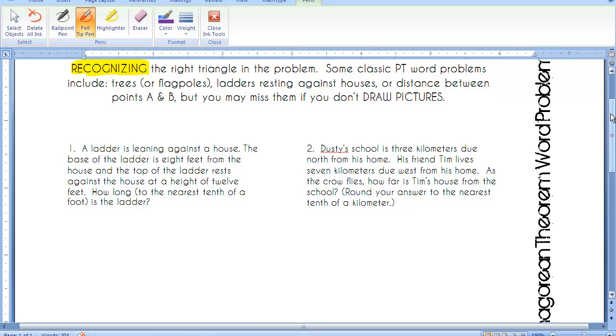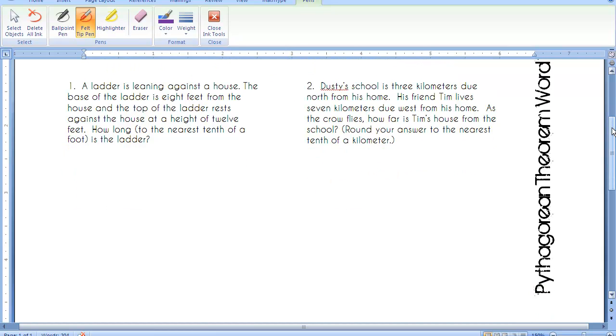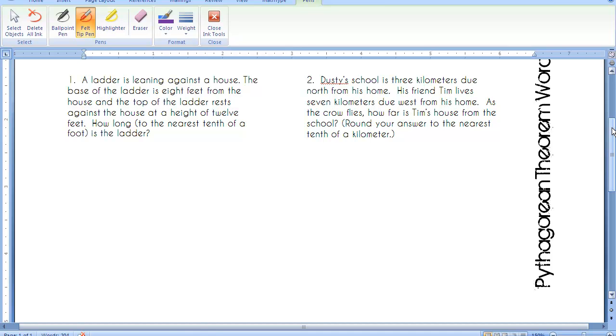Let's take a look at the first problem here. A ladder is leaning against a house. The base of the ladder is 8 feet from the house, and the top of the ladder rests against the house at a height of 12 feet. How long to the nearest tenth of a foot is the ladder? You don't have to be a fabulous artist. Here's our house. Here is the ladder resting against the house. The base of the ladder is 8 feet from the house. There's the 8 feet. And the top of the ladder rests 12 feet. So we can kind of see the 12 feet there.